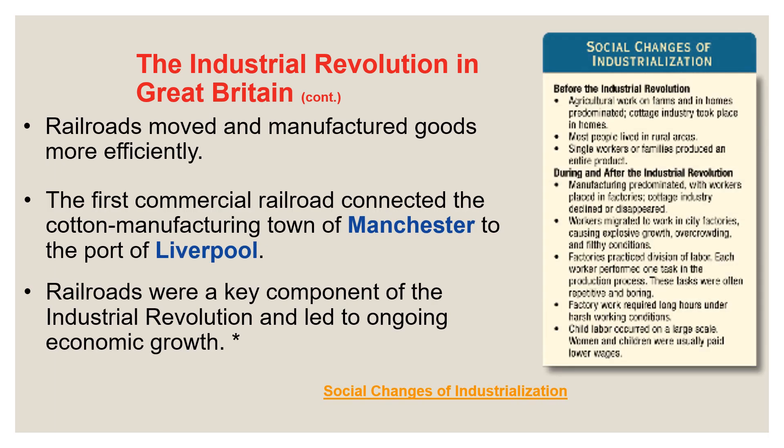Railroads moved manufactured goods more efficiently as well. The first commercial railroad connected the cotton manufacturing town of Manchester in England to the port of Liverpool. Manchester was a big textile-producing city but was landlocked; Liverpool was a port. Railroads became a key component of the Industrial Revolution throughout Europe and also in the United States, leading to ongoing economic growth by getting goods to market more quickly and efficiently. Steam power could also be applied to other kinds of transportation, like boats.